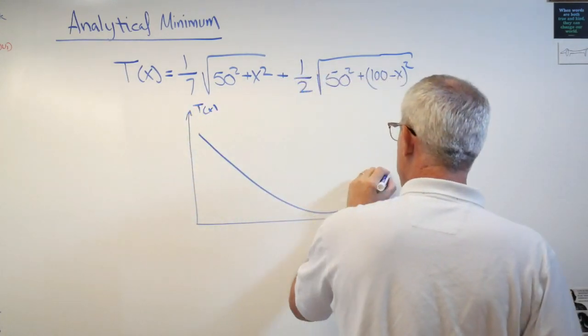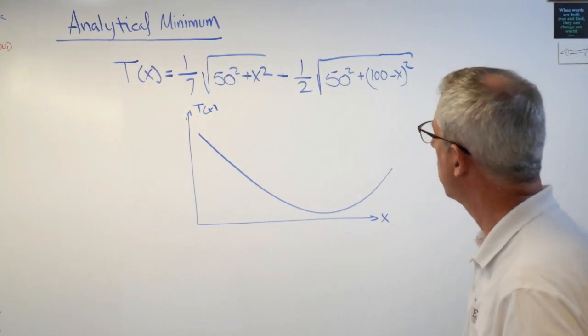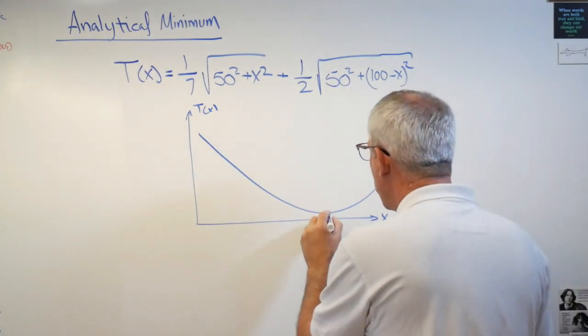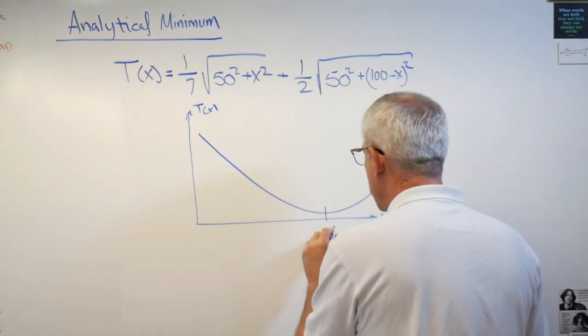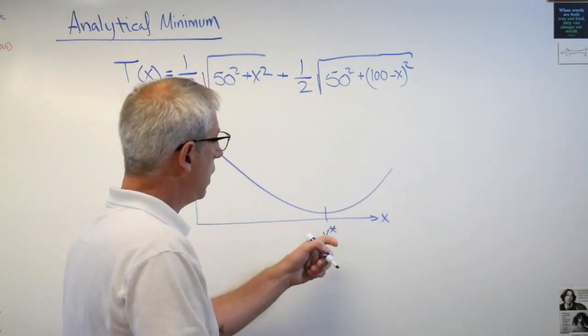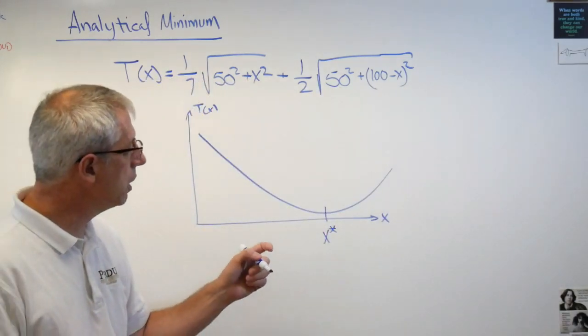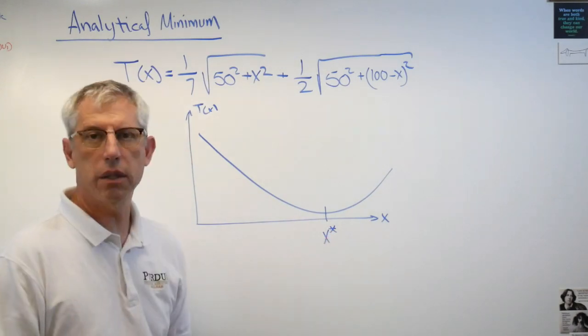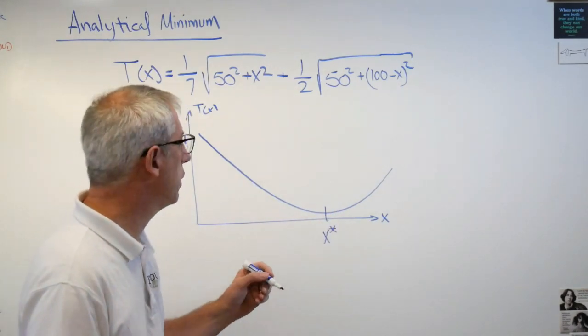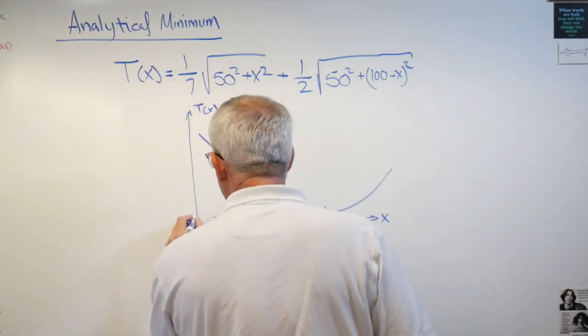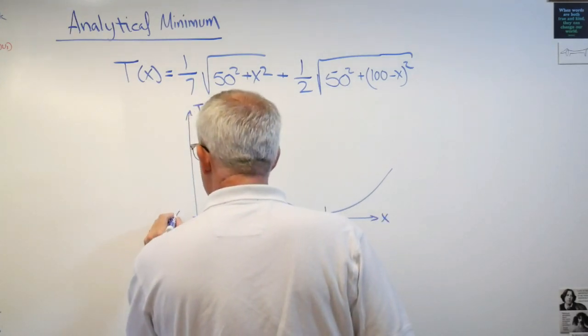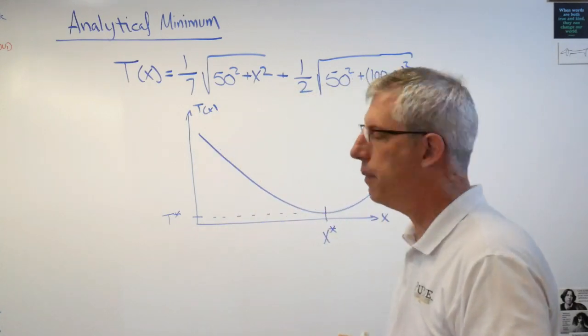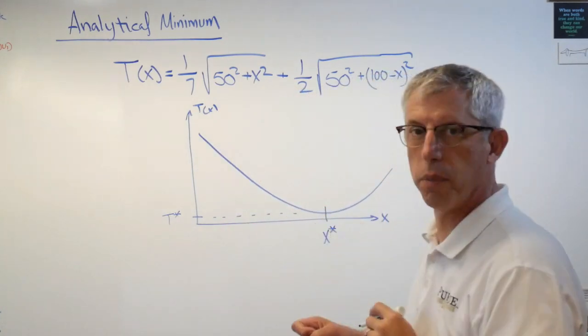Here's pretty much what the curve looked like. Here's the point where she gets in the water, and this point right here will designate x star. Now that superscript star is what you see in optimization books and papers. That designates the minimum. That's the minimum point on the function. And if we go over here, that would be t star.